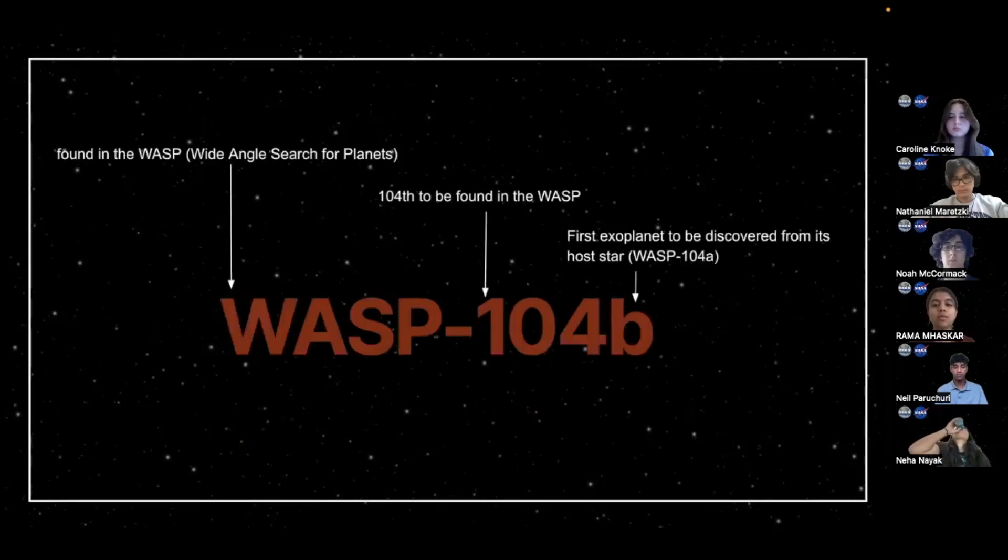So, here's a more in-depth example of an exoplanet naming convention. On the left-hand side, it indicates that this was found in the WASP-wide-angle search for planets. In the middle, it indicates that it's the 104th to be found in the WASP. And b indicates that it's the first exoplanet to be discovered from its host star, WASP-104a.